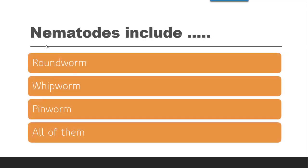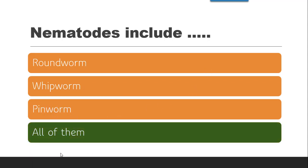Next question: Nematode includes — we just discussed what worms nematode includes. First roundworm, yes it is there. Whipworm, it is also there. Pinworm, yes. So the correct answer is all of them. Nematode includes roundworm, whipworm, pinworm, etc.